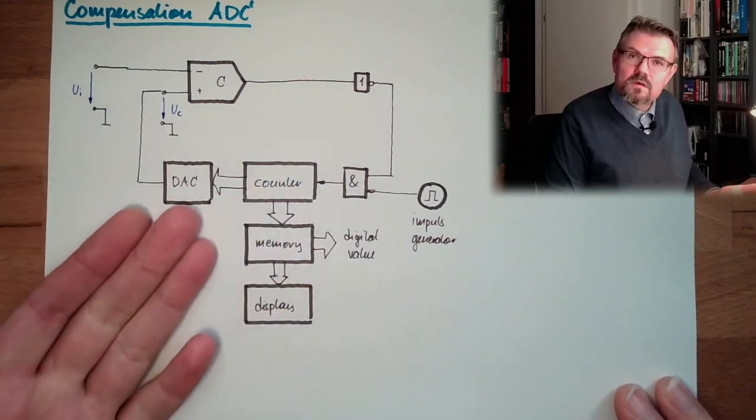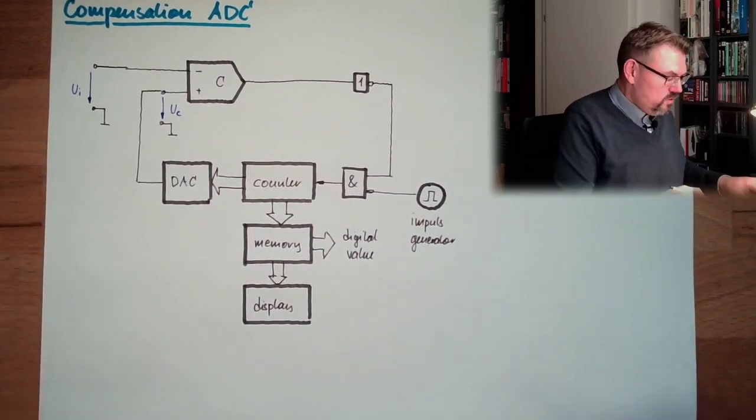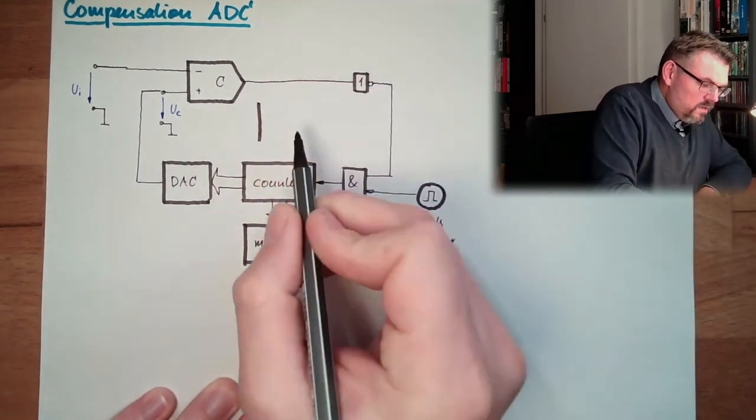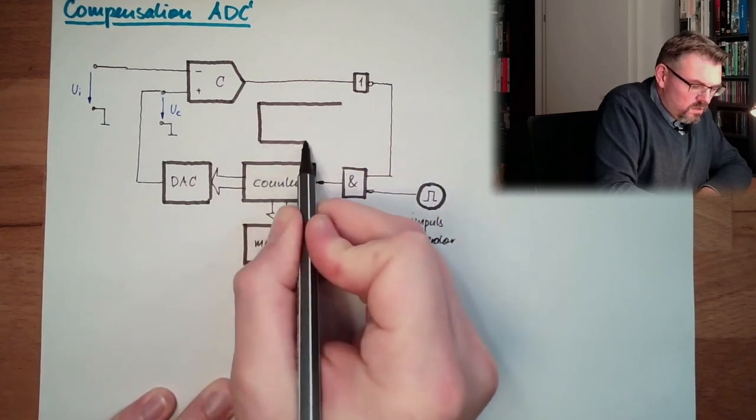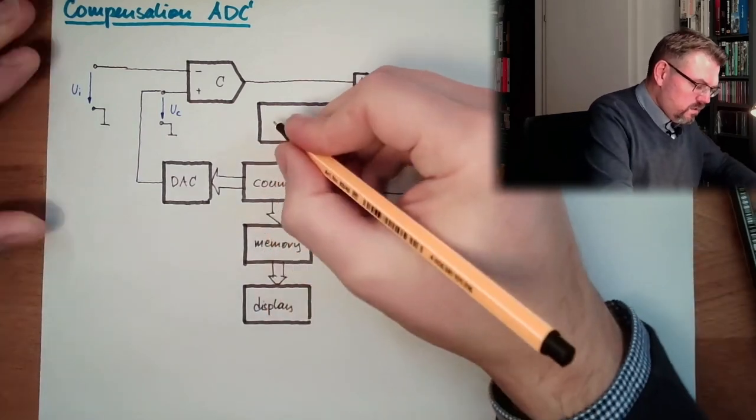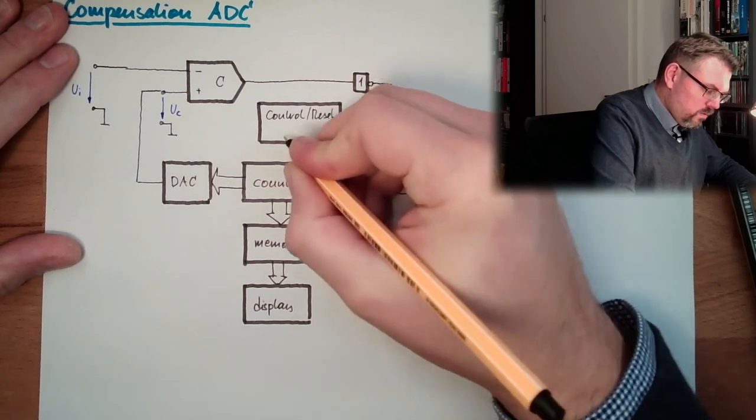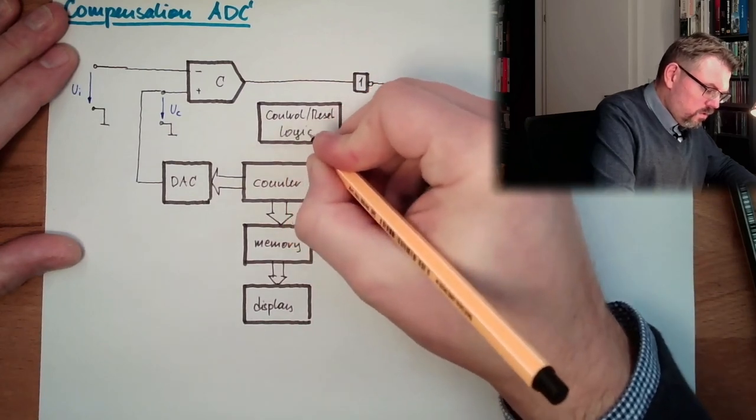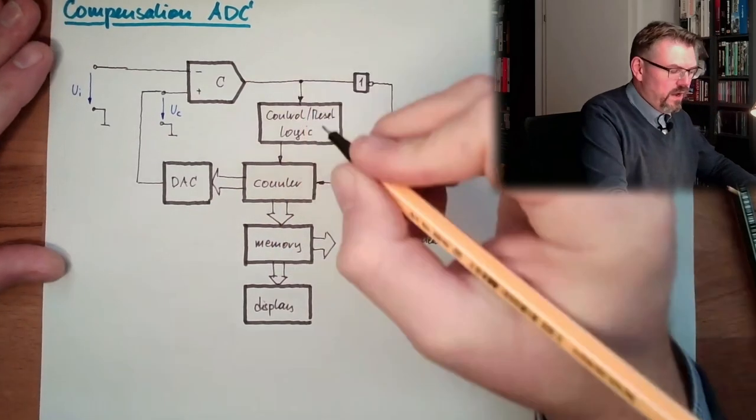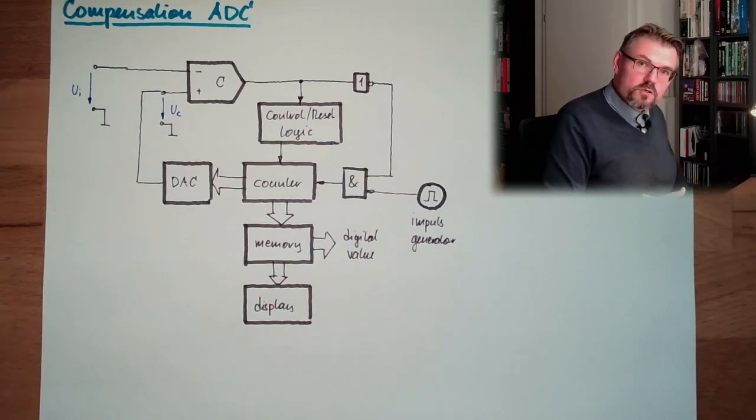And then we stop the counter. We stop it. That's it. Then we stop counting. This is already done. I need then some logic here. So I need somehow a control logic, control reset logic, which will trigger here a reset. This also needs the information if we are already higher. And that's it. That's actually it. Straightforward approach.